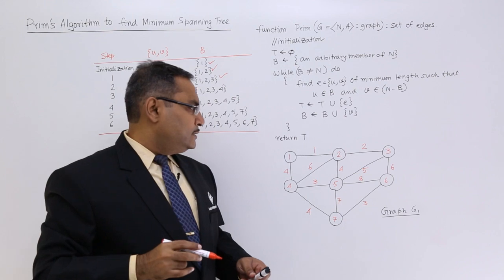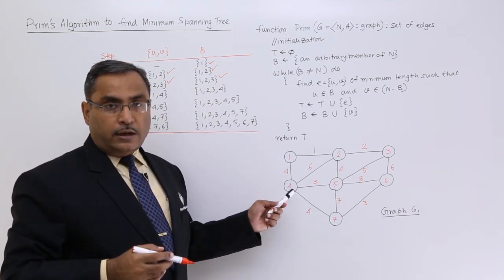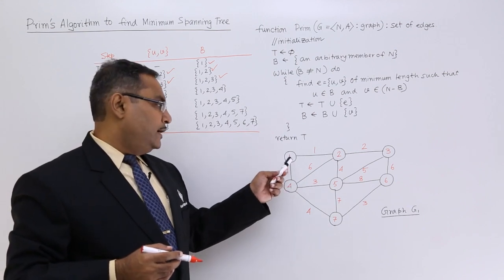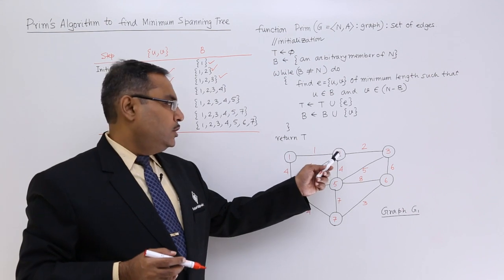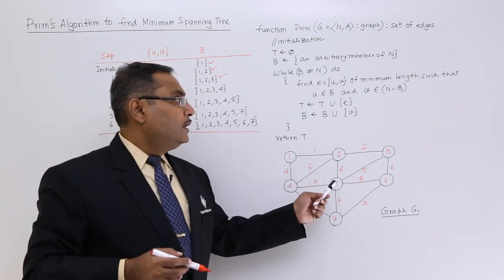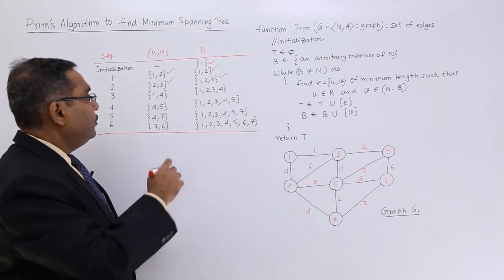From 1, 2, 3, what is the outward edge? What is the edge which is connecting another unconsidered vertex? Here we are having edge 1-4; also you can have another—a tie has occurred—that is edge 2-5. We can resolve the tie arbitrarily, so I shall go for edge 1-4.